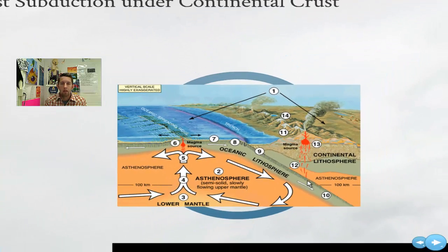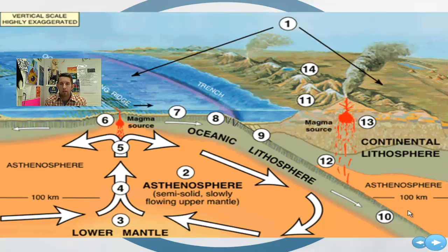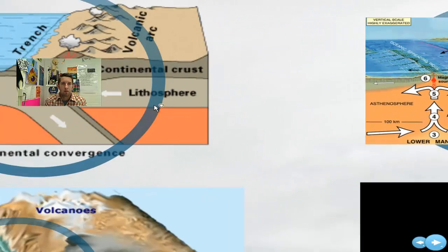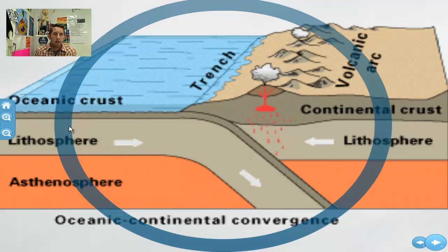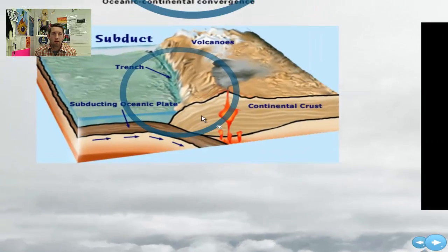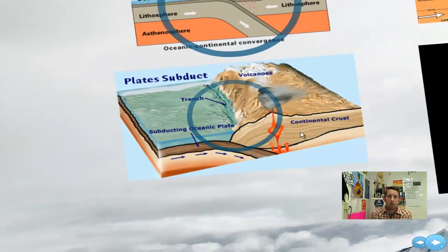As it subducts, it's taking the water with it — taking ocean water down. As we know, things approaching the core of the earth heat up. So this water heats up, turns into steam, steam rises, pushes the land upward, and creates volcanoes. Subduction creates water and steam rising, and there's a trench that forms at the margin of these two plates. Here's another representation: trench, subduction, steam rising, volcano.